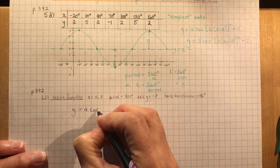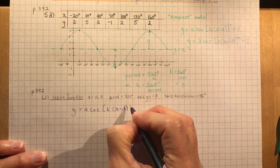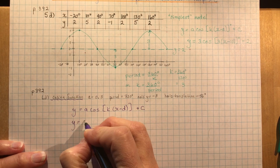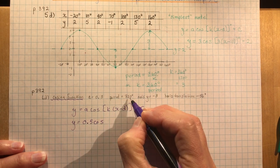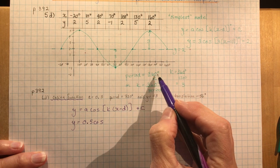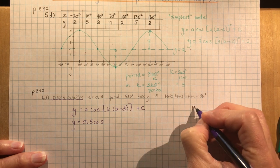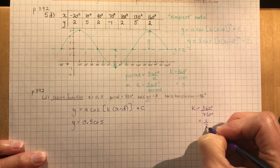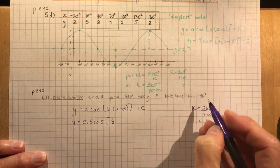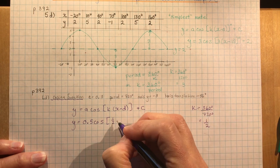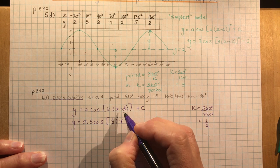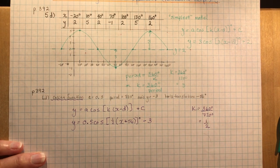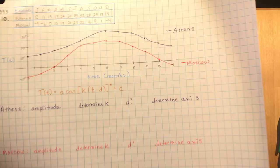They give a = 0.5, so y = 0.5·cos(...). The period is 720, so k = 360 ÷ 720 = 0.5. The horizontal translation is 56° to the left, which means minus a minus, so it becomes +56°. The axis is −3. Final equation: y = 0.5·cos(0.5(x + 56)°) − 3.